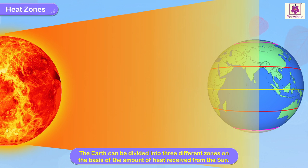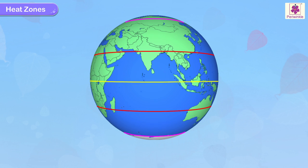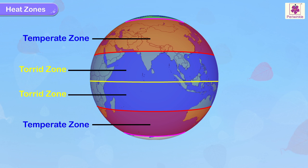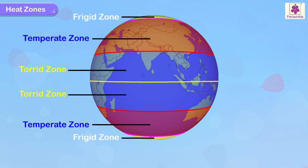The Earth can be divided into three different zones on the basis of the amount of heat received from the Sun. The three heat zones are the torrid zone, the temperate zone, and the frigid zone. Let us learn a little about the position and climate of these heat zones.